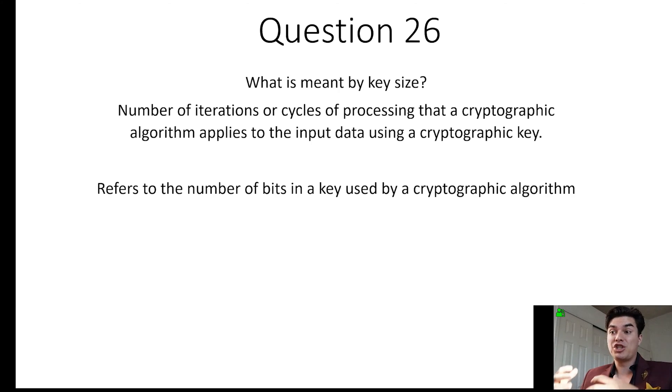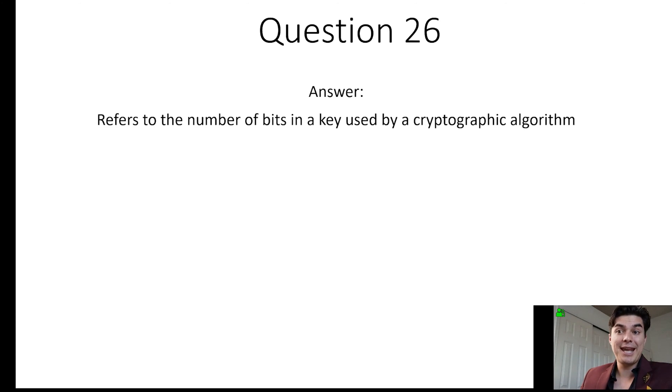However, a negative of using too much encryption is that it's going to take maybe too much processing power. It's going to slow down the network. And so companies are trying to find a nice balance between strong protection for the company as well as fast network speed. So again, the answer for number 26, it refers to the number of bits in a key used by a cryptographic algorithm.